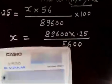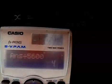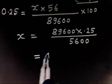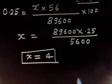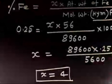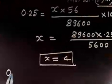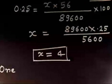So if I calculate: 89600 into 0.25, divided by 5600 — this comes out to be 4. So, the number of iron atoms in one molecule of hemoglobin is 4. This is the exact number because the percentage of iron in hemoglobin is given as 0.25%. So, one molecule of hemoglobin contains 4 atoms of iron.